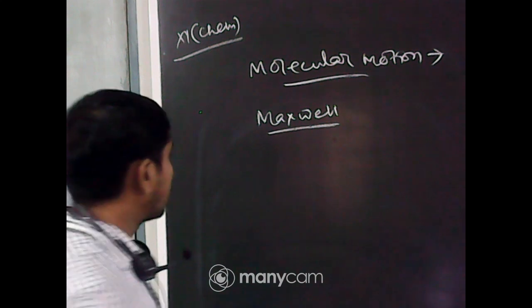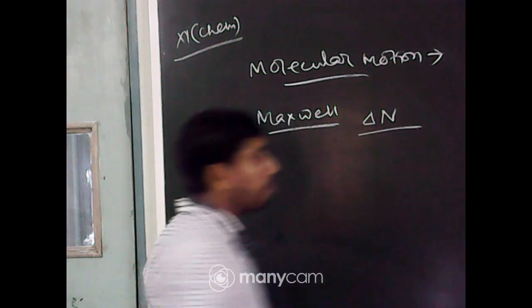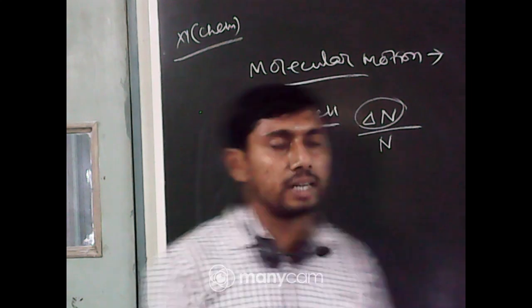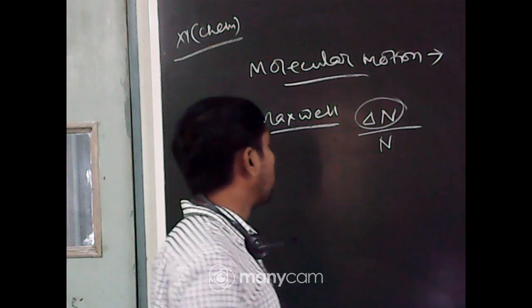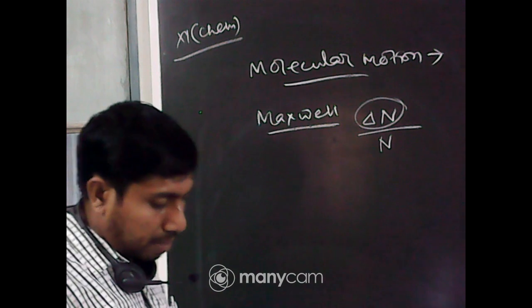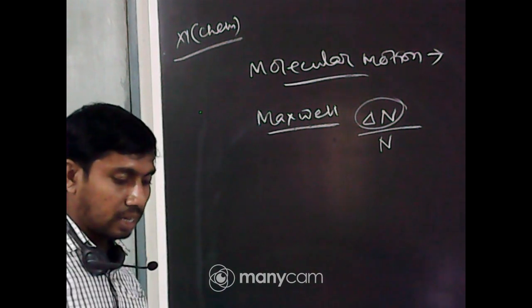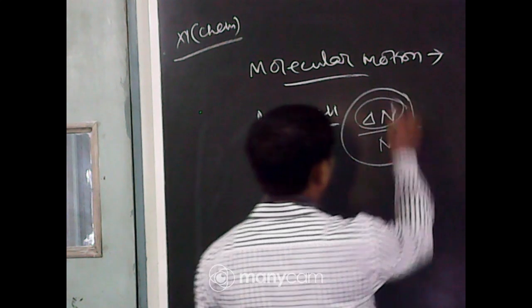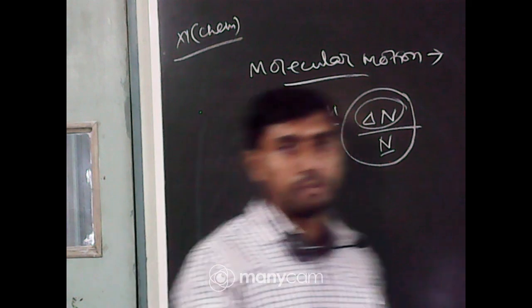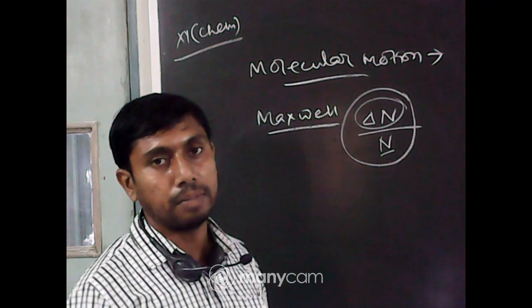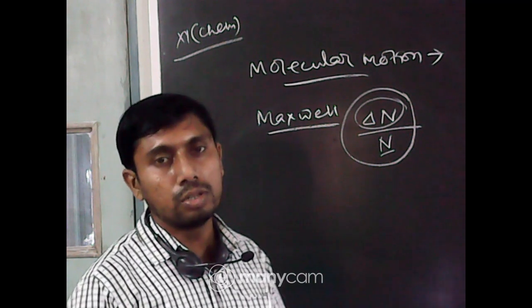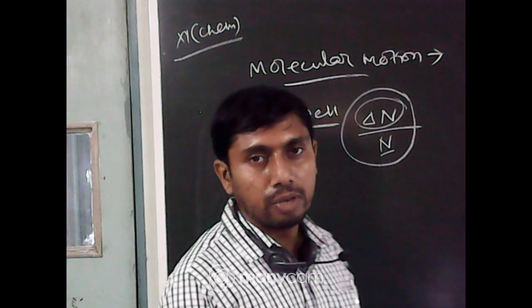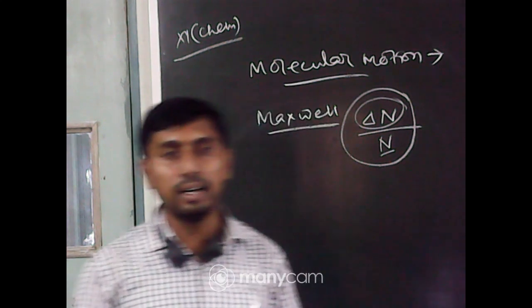The first postulate: a fraction of molecules — if there are n number of molecules, the fraction is taken as delta n. This group of molecules assumes the same velocity. The fraction delta n by n having either very low speed or very high speed is very small. Out of the total particles, those having very high or very low velocity are few. As collisions are ongoing, most molecules have average velocities.